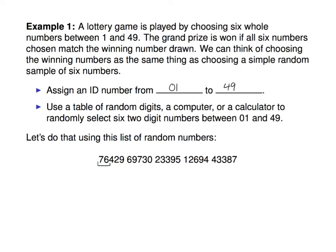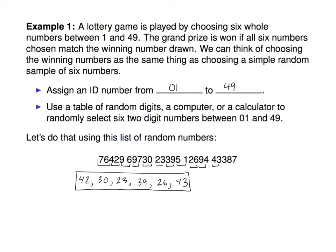Our first number, looking at it in twos: 76 is not in range, so we skip it. The next number 42 is, so 42 will be our first random number. Then 96 is too big, 97 is too big, but 30 is okay. 23 is also good. 39 is also good — that's five so far. 51 is just a hair too big, but next we have 26. That's five; one more. 94 is too big, but 43 is okay. And so there is our simple random sample found using a list of random numbers.